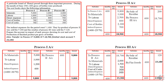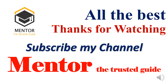I hope I made clear the basic concept of what is process costing, the accounting treatment, and the format of the process account. We solved two problems: one without normal loss or sale of scrap, and one with normal loss and sale of scrap. Down the line I will be making one more video regarding abnormal loss and abnormal gain. Thanks for watching — please subscribe to the channel 'Mentor: The Trusted Guide' to motivate me to make more quality informative videos.